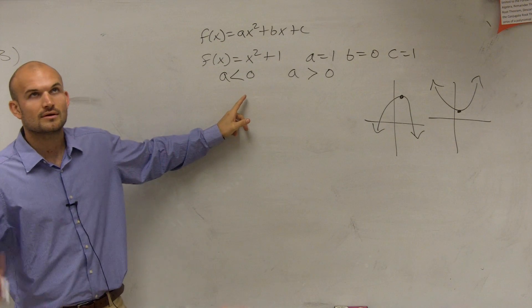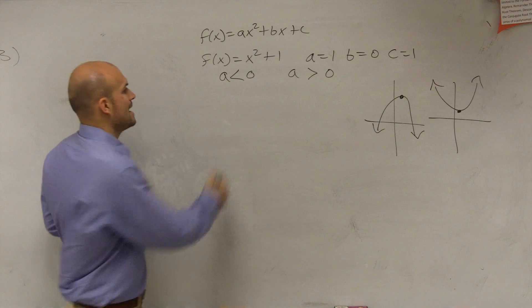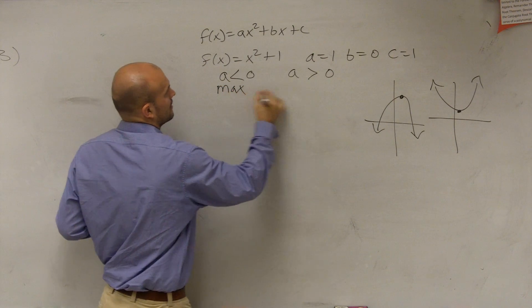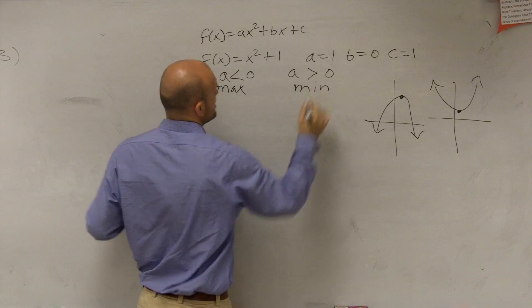When a was less than 0, you have less than 0, so you have a max. And when a was greater than 0, you had a minimum point.